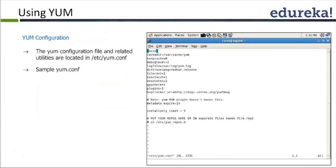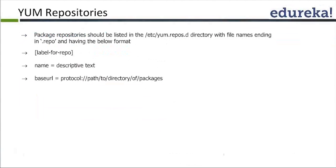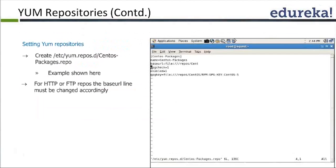Usually, if you have a Red Hat license, they will provide you the Red Hat repository, or you can keep the repository in the company itself. That location must be specified in the configuration file from where YUM will go and fetch it. The structure is /etc/yum.repos.d/ where we have multiple repository files that are created.